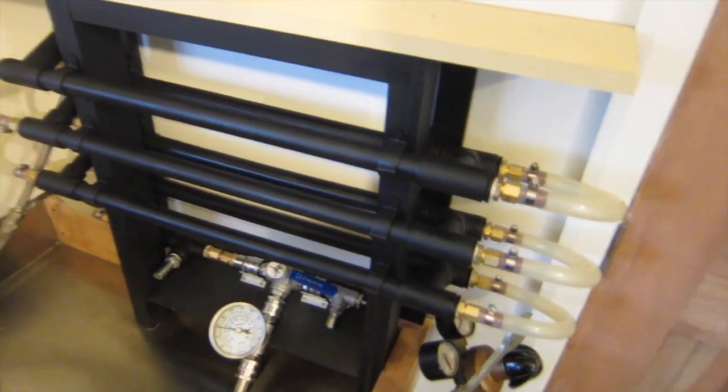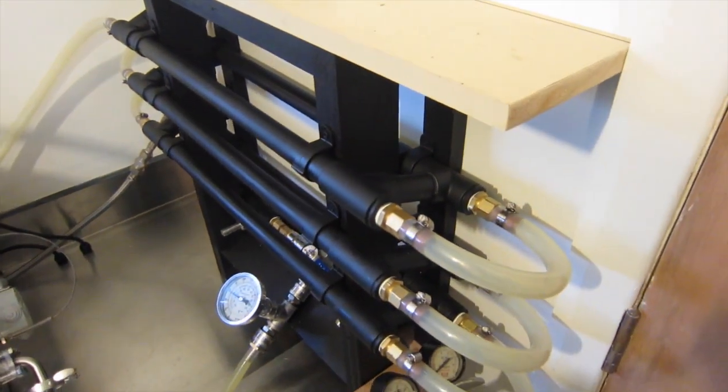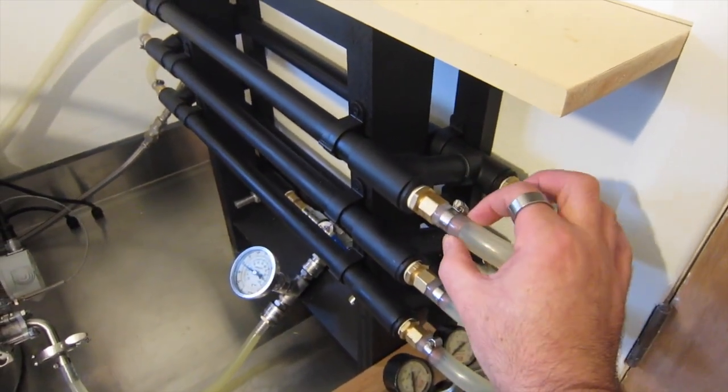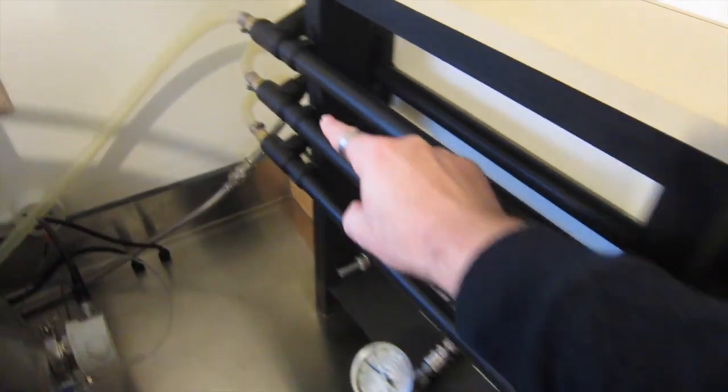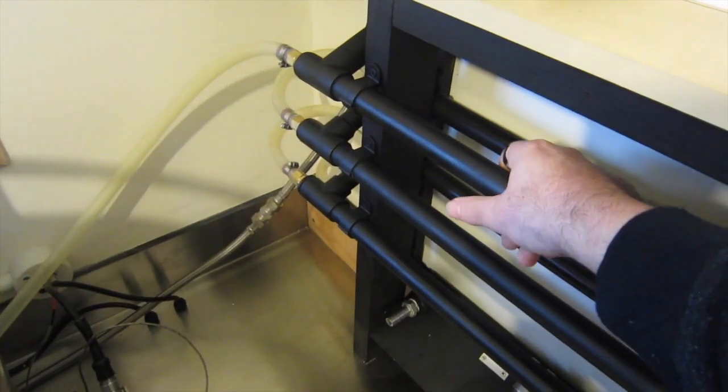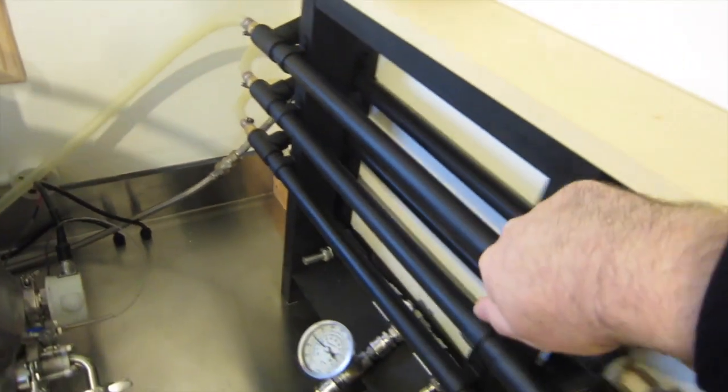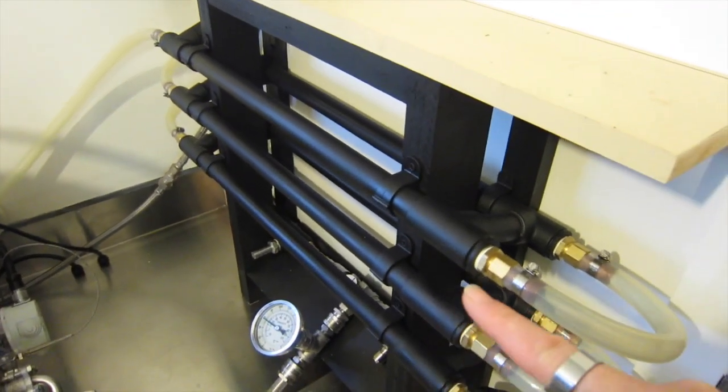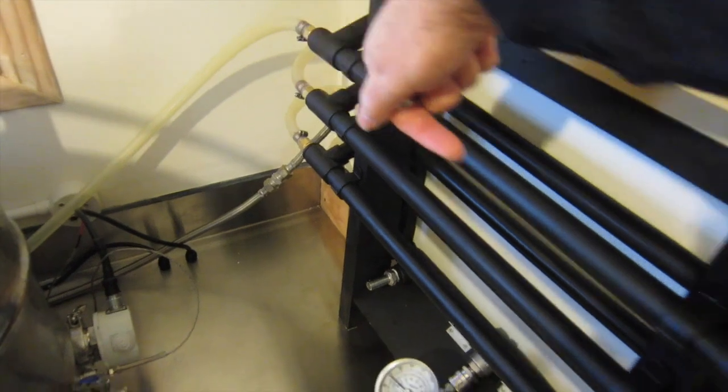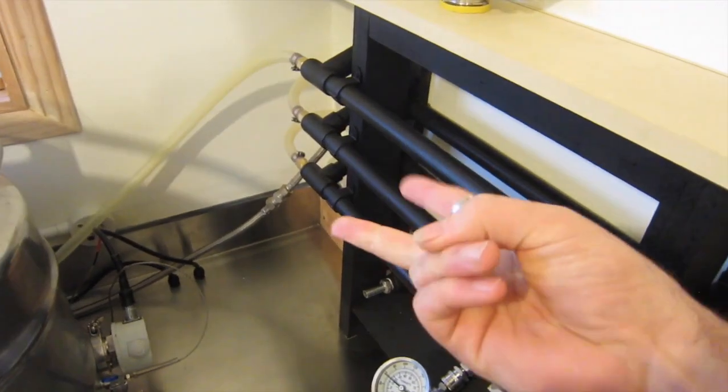To give you a quick rundown before we jump into the design and build, basically it is copper pipe that runs through a PVC pipe, and the PVC pipe has water that runs in the opposite direction. The wort runs one way and the water runs in the opposite direction, and they transfer their heat.